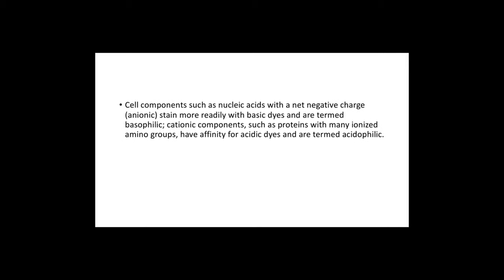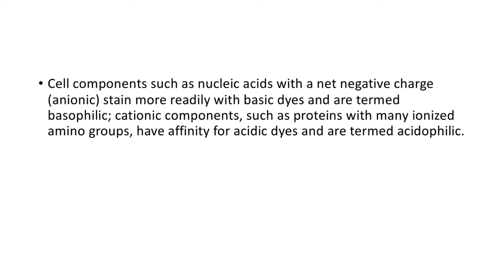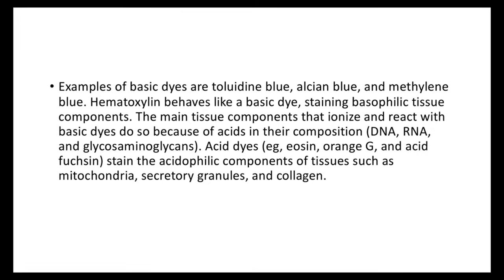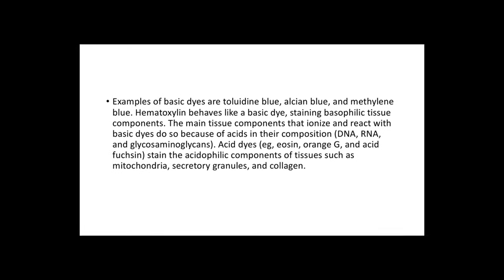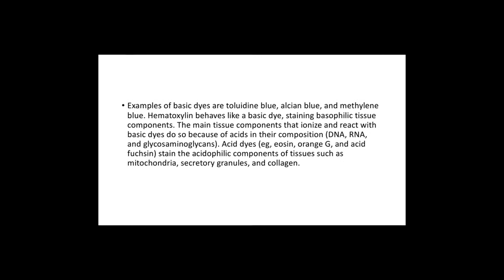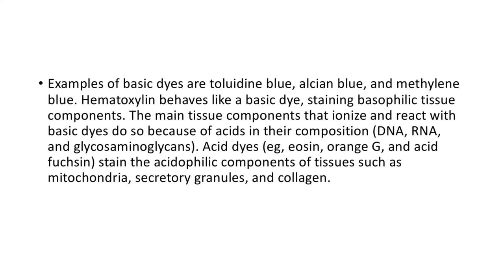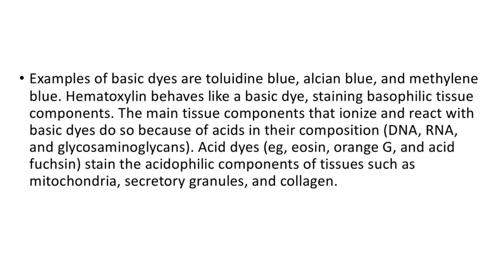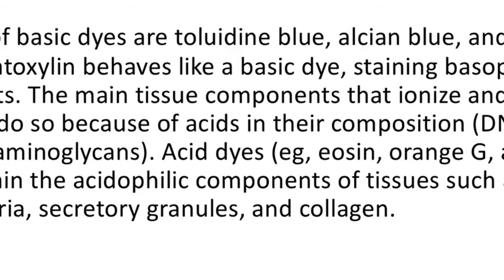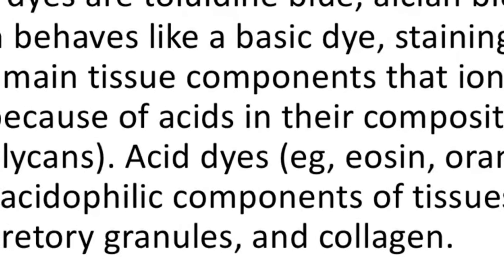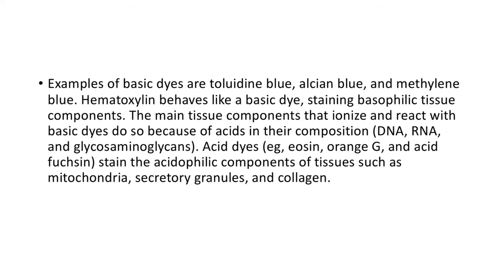Cell components such as nucleic acids with a net negative charge stain more readily with basic dyes and are termed basophilic, while cationic components such as proteins with many ionized amino groups have affinity for acidic dyes and are termed acidophilic. Examples of basic dyes are toluidine blue, alcian blue, and methylene blue. Hematoxylin behaves like a basic dye, staining basophilic tissue components — primarily DNA, RNA, and glycosaminoglycans. Acidic dyes like eosin, orange G, and acid fuchsin stain acidophilic components such as mitochondria, zymogen granules, and collagen.